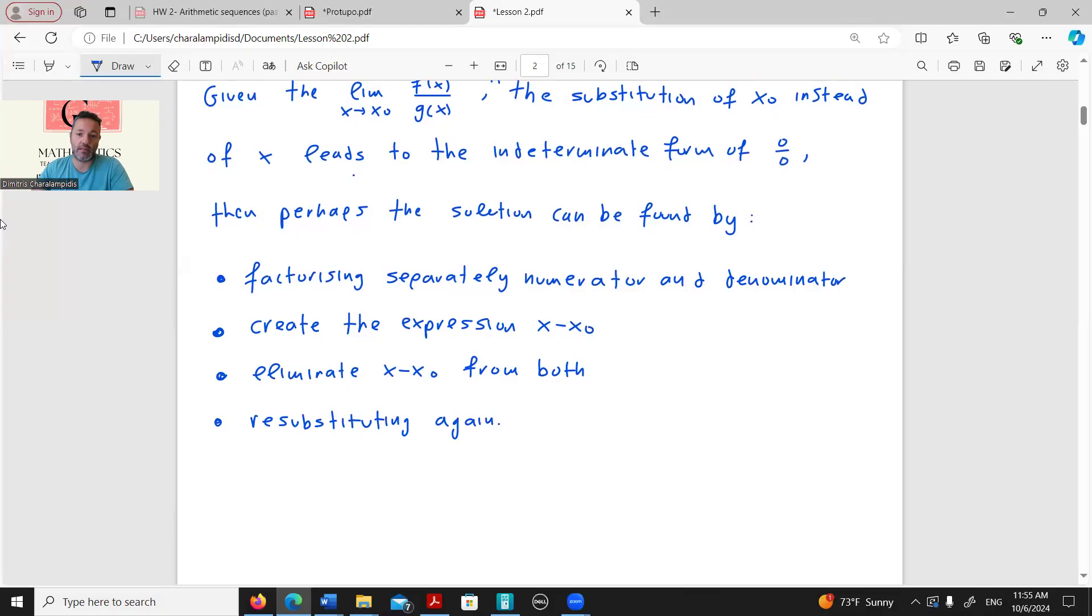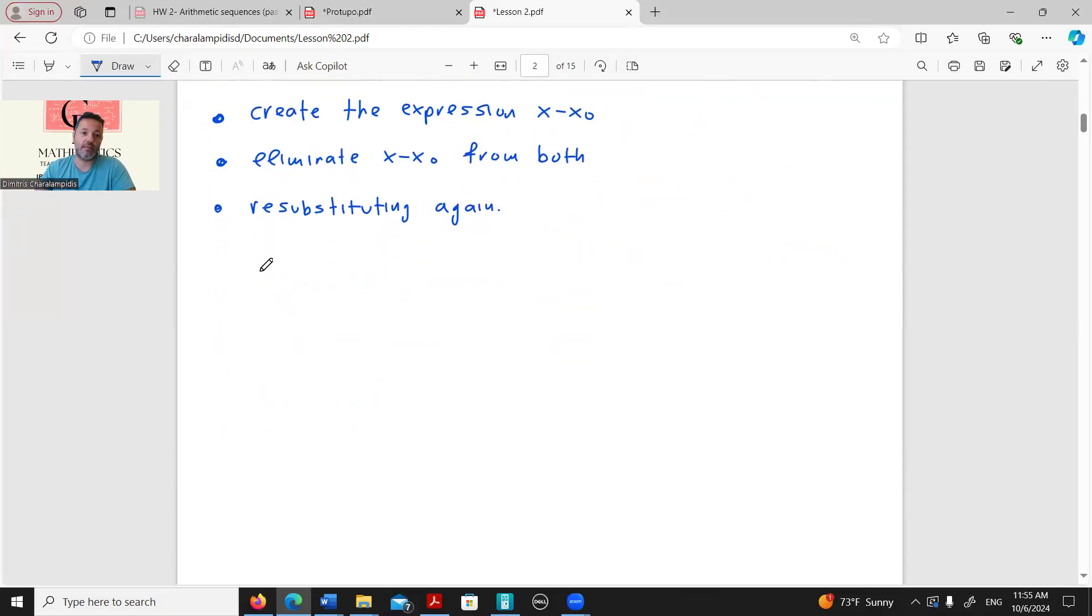We will work some examples. Let's see example number one. We want to calculate the limit when x tends to 3 of 3x minus 9 over 6x minus 18. Of course, the first thing is to substitute. So for x equals 3, we get 3 times 3 minus 9 over 6 times 3 minus 18, which is 0 over 0. It cannot be solved.